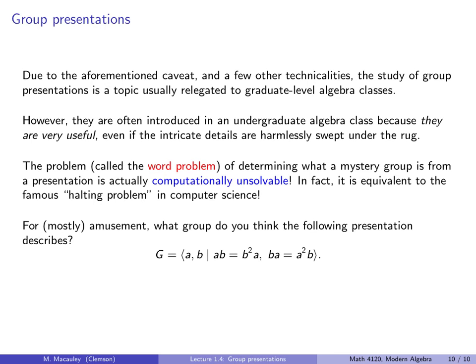For example, and mostly for amusement, what group do you think the following presentation describes? I encourage you to pause the lecture and see if you can draw a Cayley diagram or write out some words and just play with this a little bit and see if you can figure out what group this is. So it's a group generated by two elements, A and B. AB equals B squared A, and BA equals A squared B. Ready? Want me to tell you? Surprisingly, this is the trivial group. In other words, the trivial group is the only group that has two elements, A and B, namely A and B are the identity that also satisfy these relations.